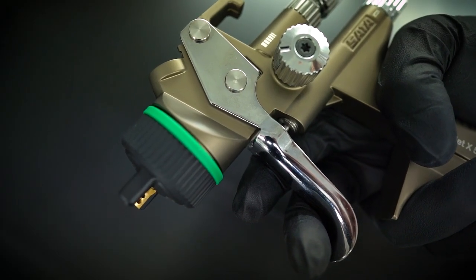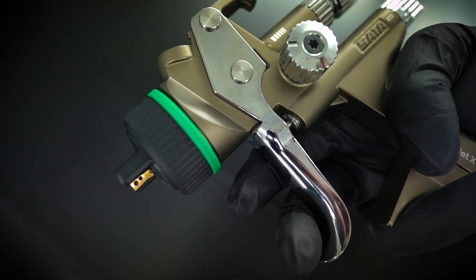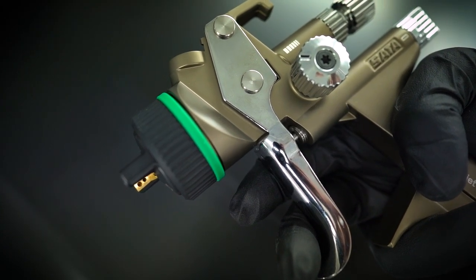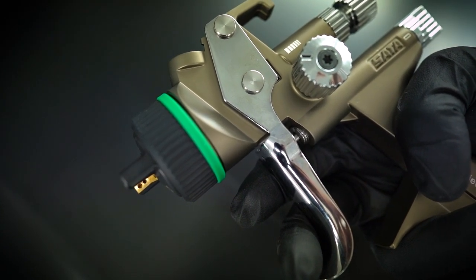Number one, HVLP for SATA has always had either a green band on the air cap or they've been a green body so that you can see by looking at them that they're HVLP.